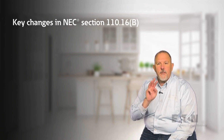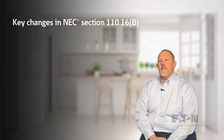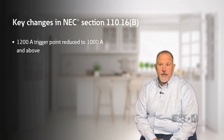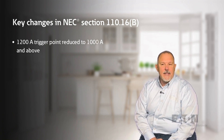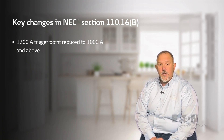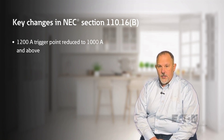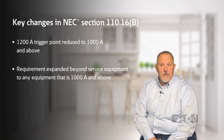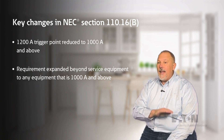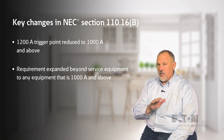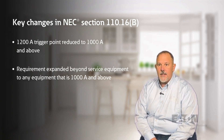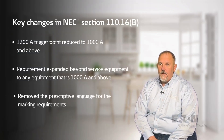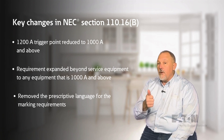NEC 2023 introduced three major changes to 110.16d. First, the 1200 amp trigger point was reduced, impacting panel boards, switchboards, and switchgear 1000 amps and larger. Second, this requirement was expanded beyond service equipment to any panel board, switchboard, and switchgear 1000 amps and larger.